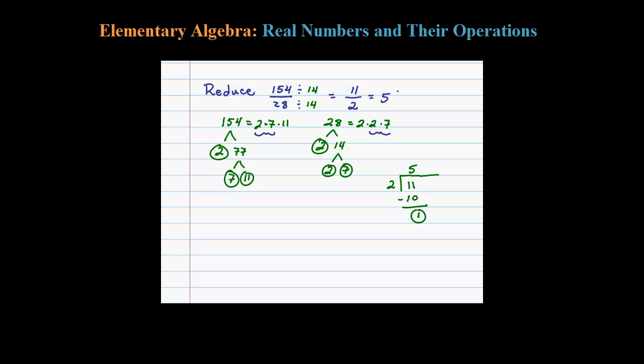That means 2 goes into 11 five times plus 1 over the 2 here is what we're dividing by, so plus 1 half leaves us with 5 and a half. 11 over 2 is the same thing as 5 and a half. If you want to convert that back, you would take your 2 times your 5, which is 10, plus your 1 is 11. So 2 times 5 plus 1 is 11 over 2. And there you go.